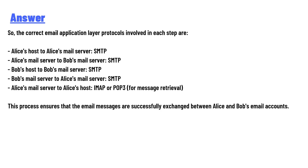The correct email application layer protocols involved in each step are: Alice's host to Alice's mail server — SMTP; Alice's mail server to Bob's mail server — SMTP; Bob's host to Bob's mail server — SMTP; Bob's mail server to Alice's mail server — SMTP; Alice's mail server to Alice's host — IMAP or POP3. This process ensures that mail messages are successfully exchanged between Alice's and Bob's email accounts.